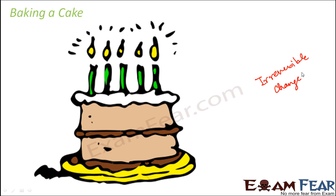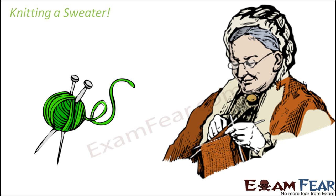Baking a cake is also an irreversible change. Once the baking is done, have you observed something? Whenever we heat an object — whether we cook it, burn it, or bake it — wherever this kind of heating is involved, the chemical structure of the object changes, and that is why the change becomes irreversible. We cannot get back the original substance.